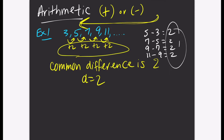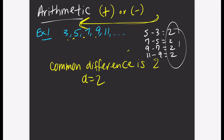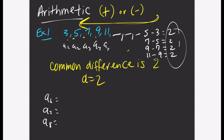Let's say I ask you for the next three terms. This is the first through fifth term, so let's find the sixth, seventh, and eighth terms. Obviously you just follow the pattern: 11 plus 2 is 13, 13 plus 2 is 15, 15 plus 2 is 17. So we just found our sixth, seventh, and eighth terms.